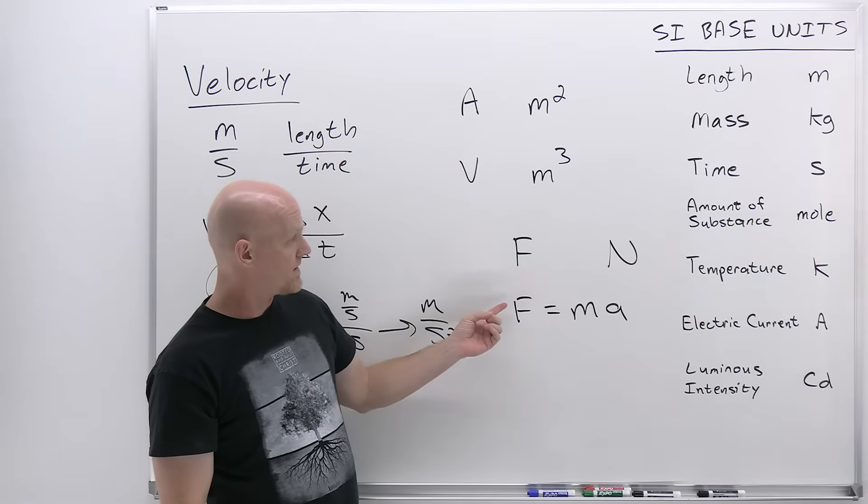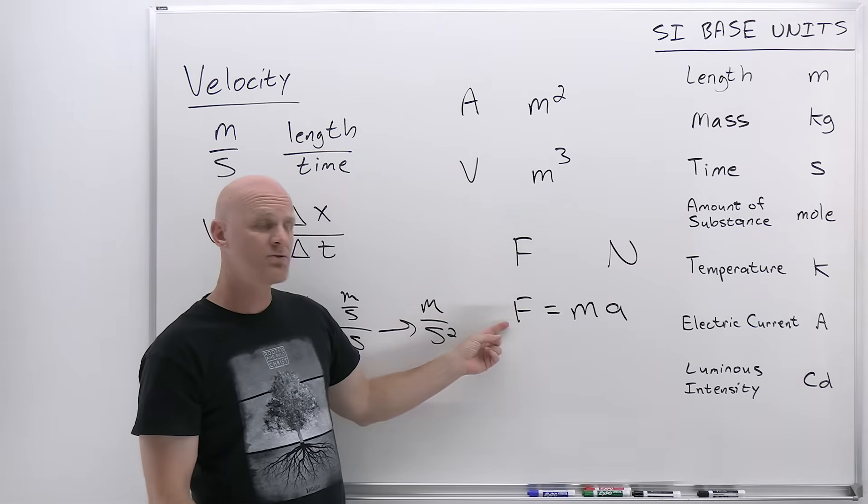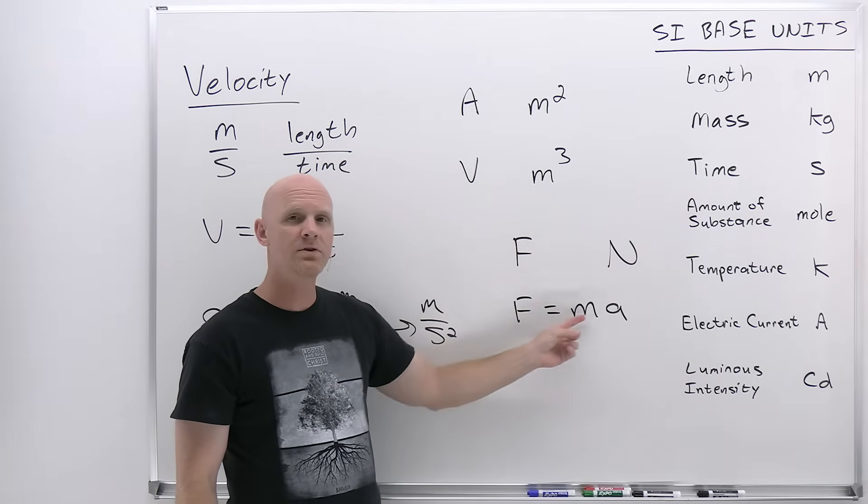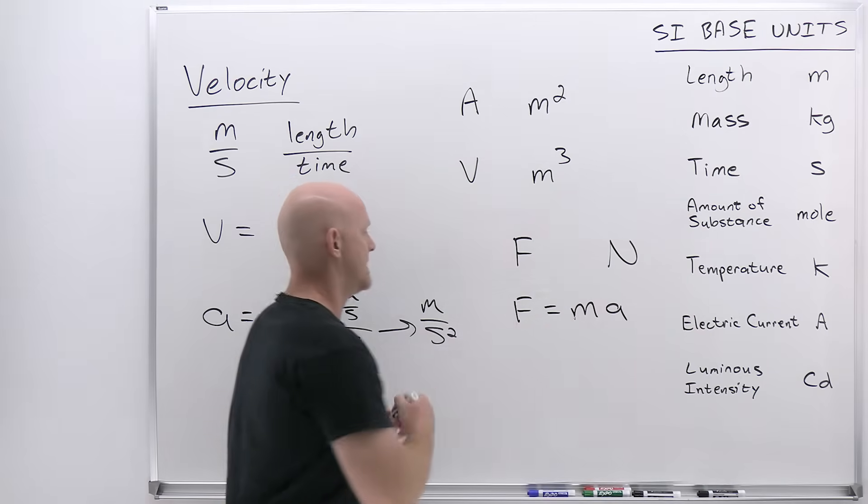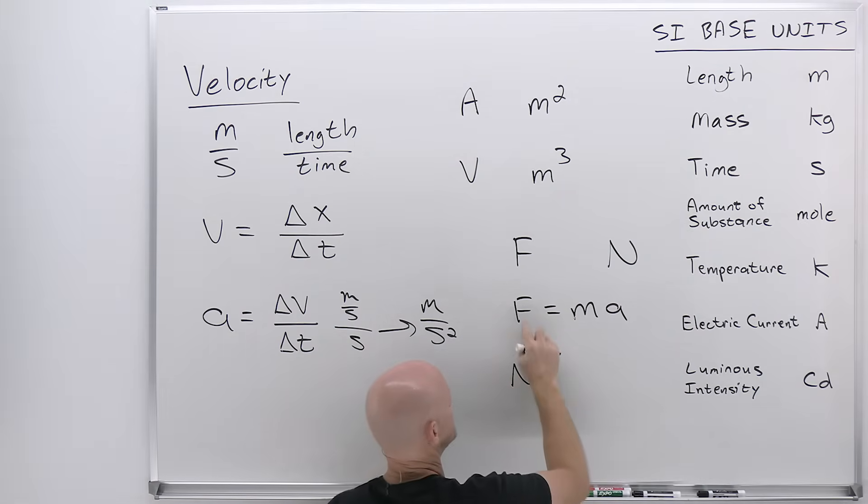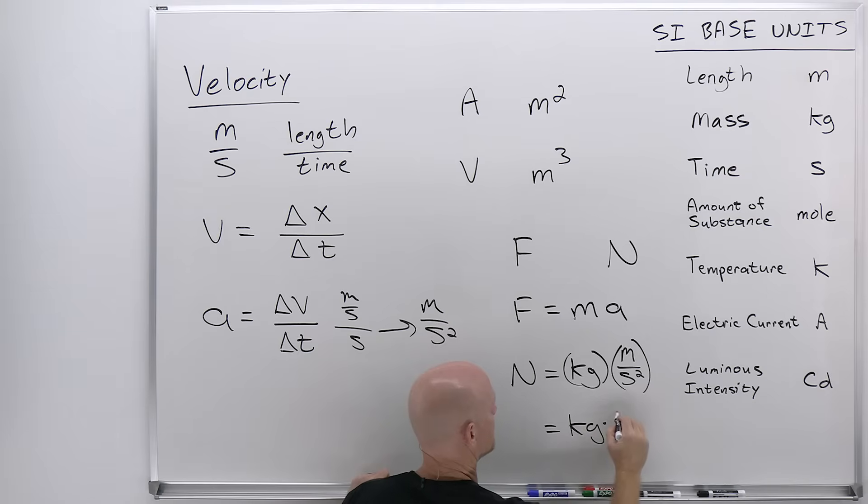If you want to figure out what the Newton is, which is the unit for force, well, then you're just going to plug in the units for mass and acceleration right next to it. You can see that the Newton, which is what force is measured in, is going to be equal to mass, which is the kilogram, times acceleration, which we said was meters per second squared. And so it turns out a Newton is a kilogram meter per second squared. That's what a Newton is.